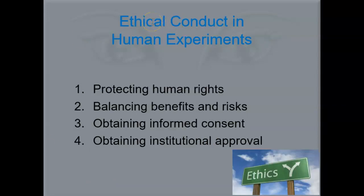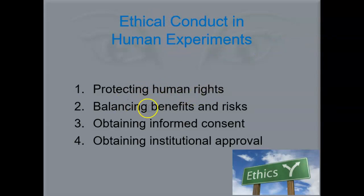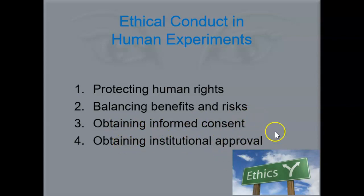In any research experiment, ethical conduct says we have to protect everyone's rights, make sure the benefits outweigh the risks, get consent from participants, and get approval from the institution. For example, if I wanted to do a study at Georgian College, I can't just go ahead — I need to get my institution to approve it first.